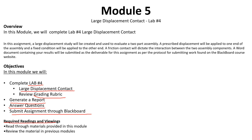Your required readings and viewings for module five include all materials provided on Blackboard for module five, as well as all materials for the first four modules, because this material builds upon itself. As you move forward, you'll notice these labs give you less and less information from the very beginning compared to previous labs. They're expecting you've learned how to do certain things in labs one, two, and three, and won't be holding your hand through that in lab number four. That's why it's important to go back and review the previous material.